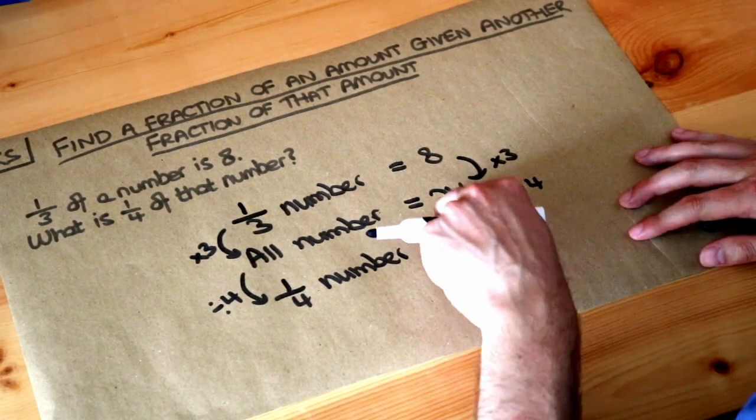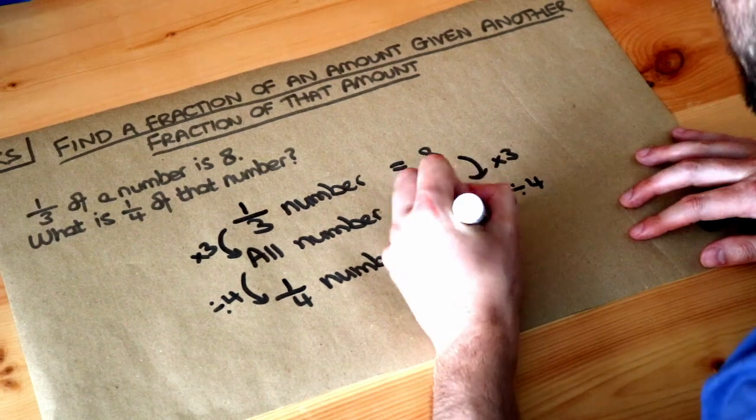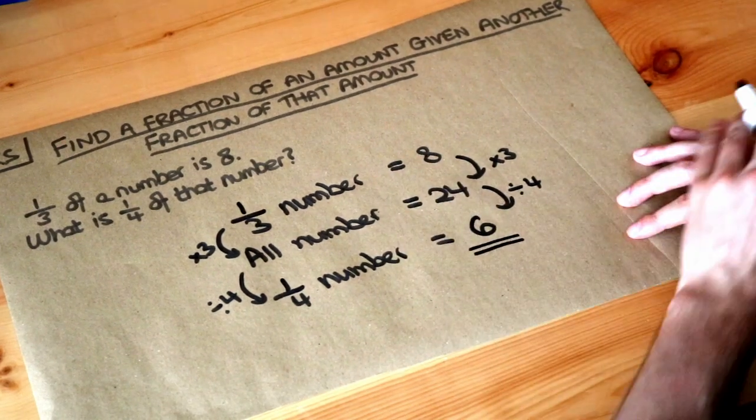We can halve and halve again. Half of 24 is 12. Half of 12 is 6. So therefore, a quarter of the number is 6.